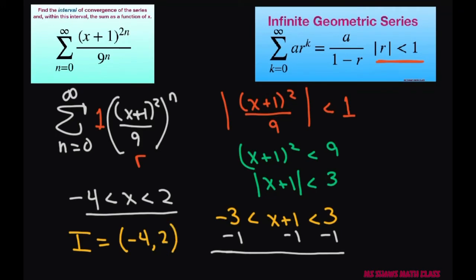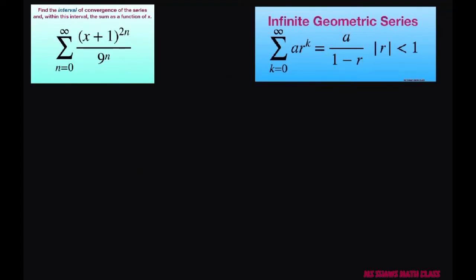Now let's find the sum and we're going to use this formula. Again, this is your r and your a is one. So let's find our sum and that's going to be the sum equals a divided by one minus r, which equals one divided by one minus x plus one squared divided by nine, which equals one divided by nine minus x plus one squared divided by nine.